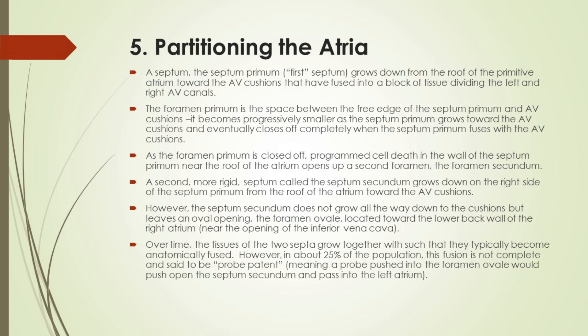Partitioning the atria: A septum — the septum primum, or first septum — grows down from the roof of the primitive atrium toward the AV cushions that have fused into a block of tissue dividing the left and right AV canals. The foramen primum is the space between the free edge of the septum primum and the AV cushions; it becomes progressively smaller as the septum primum grows toward the AV cushions and eventually closes off completely when the septum primum fuses with the AV cushions. As the foramen primum is closed off, programmed cell death in the wall of the septum primum near the roof of the atrium opens up a second foramen, the foramen secundum.